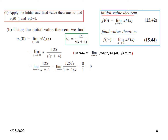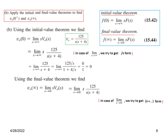For the final value, we take the limit as S tends to 0 of S·V0(S). We express the result in the form (S plus some value) in the denominator. Substituting S equals 0 gives 120 divided by 25 divided by 4, so the answer is 31.25. We have now found both v0(0+) equals 0 and v0(∞) equals 31.25.